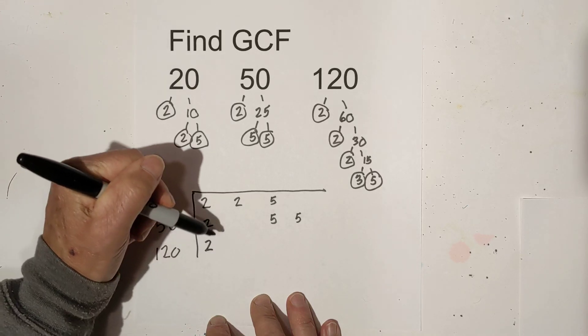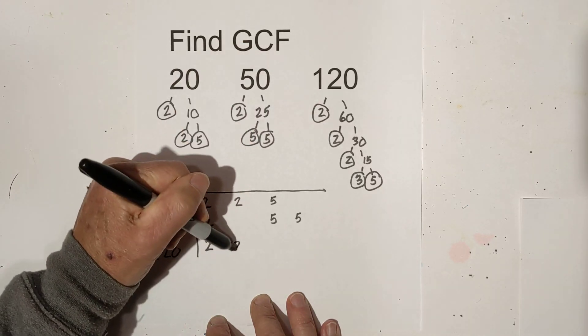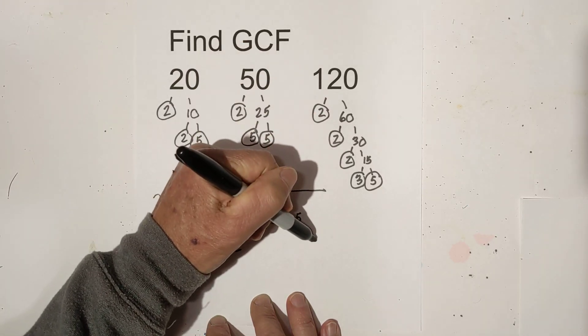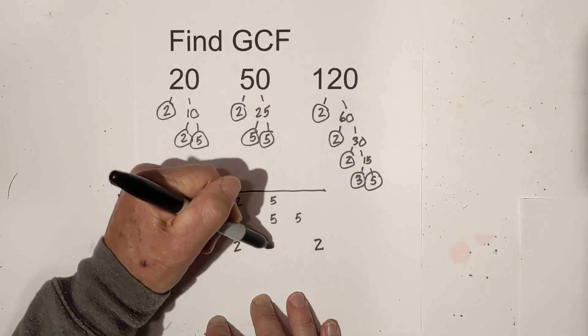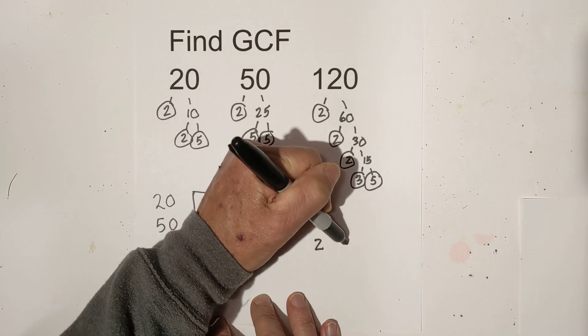And then we have a 2, and we have another 2. Then I don't have a column for a 2, so I'm going to write it over here.